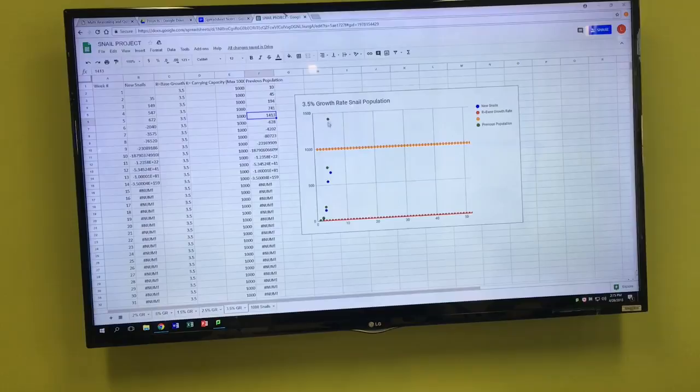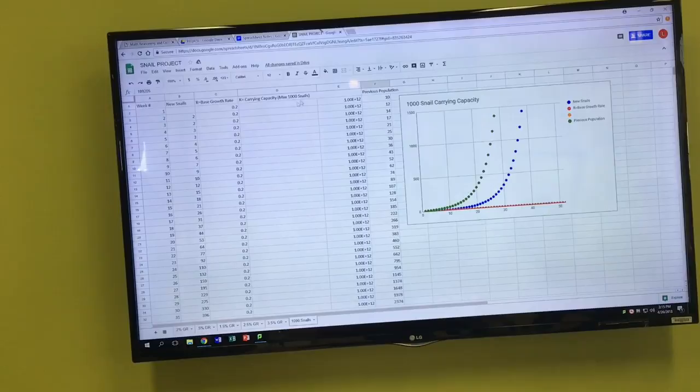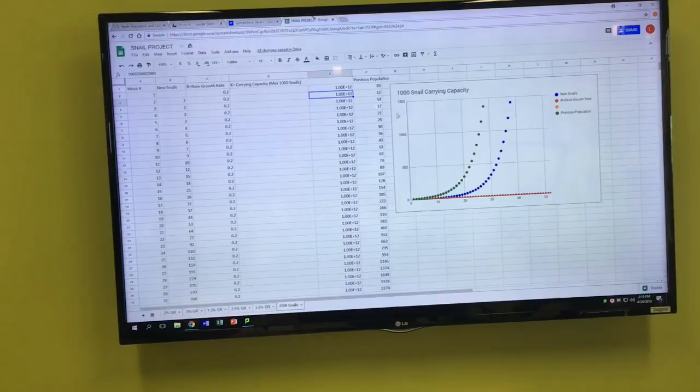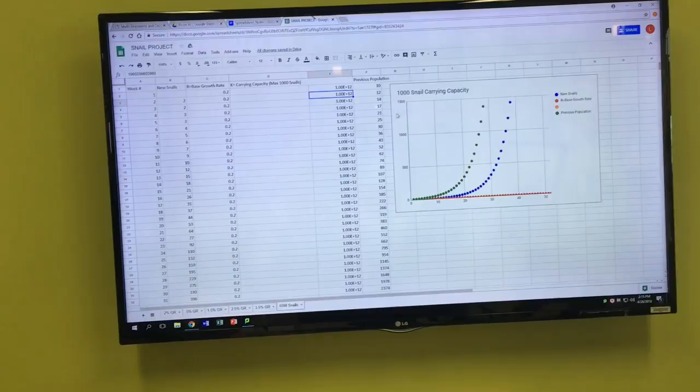And we then changed our carrying capacity to a trillion snails, and through our results we found that we didn't even get to a trillion in our first 52 weeks. And then to go back to the graph, I wanted to show that this is only the beginning of the curve, not even the first half of it, so it's still increasing.